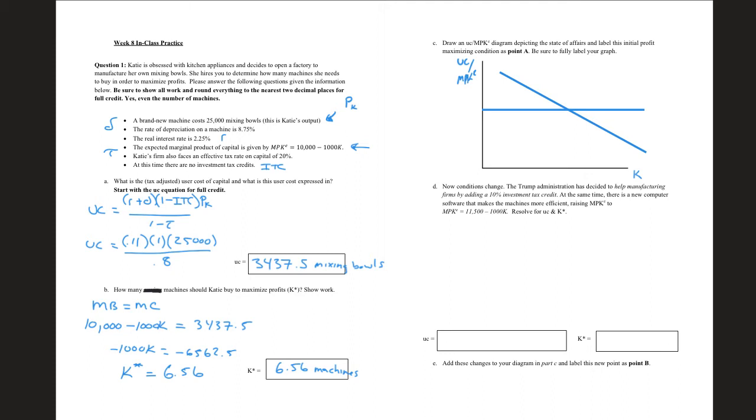And we have a downward sloping line for the marginal product of capital. Sometimes you might see it curved. It depends on what the equation is. In this case, the equation was a linear one. In my class, I just care that you know that it's downward sloping because of that diminishing marginal returns to capital. So this is my MPKE. This is my user cost of capital. And I know that it's going to be right here at 6.56. This is my user cost of capital, which is going to be 3437.5. And we've finished part C.